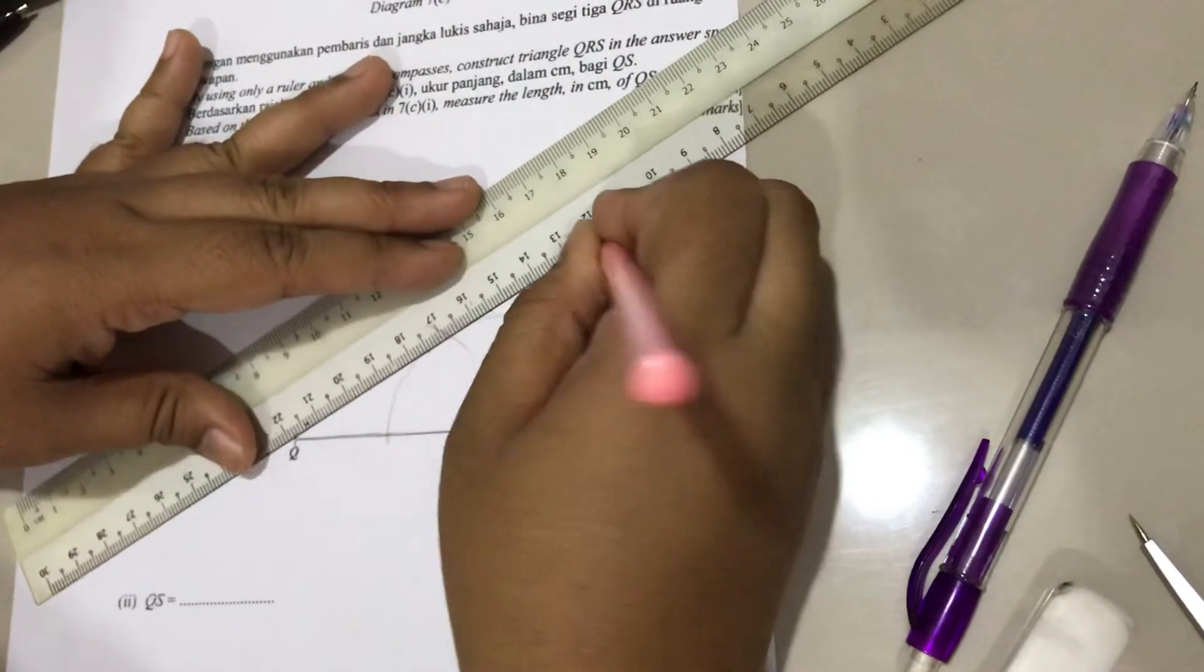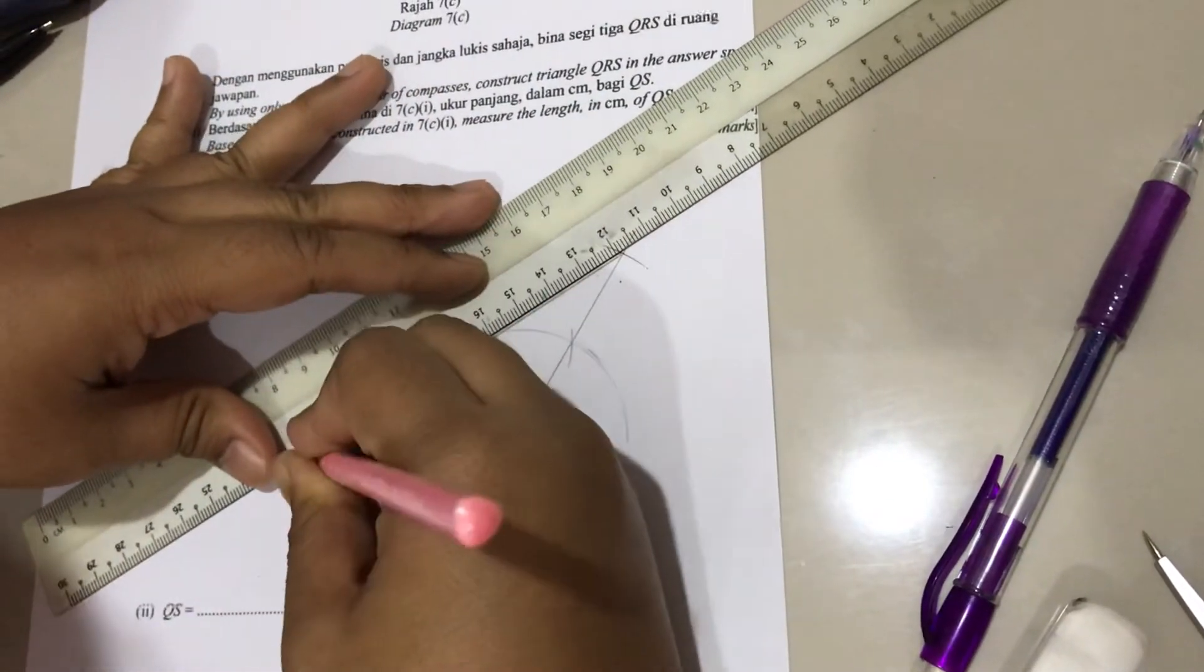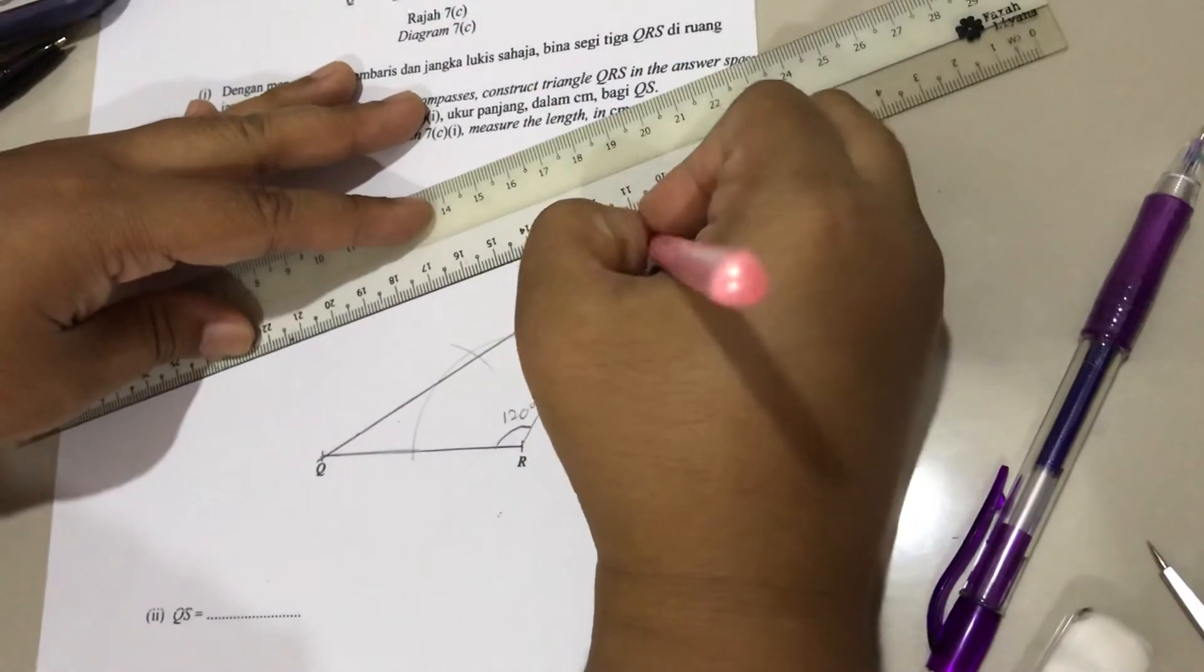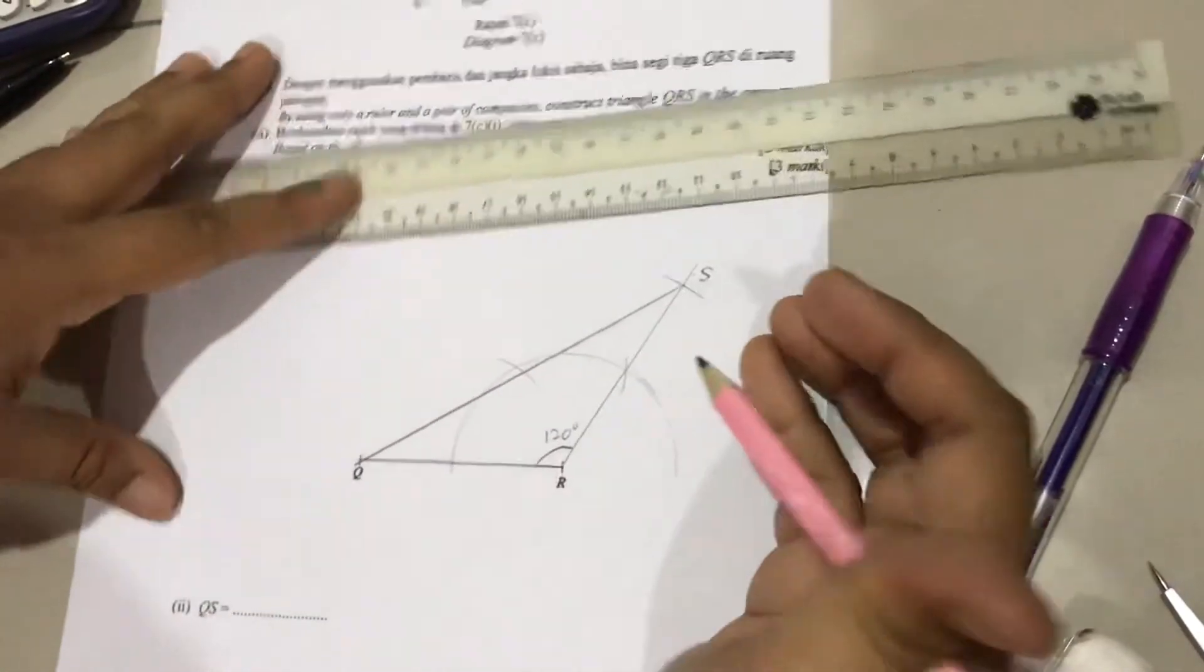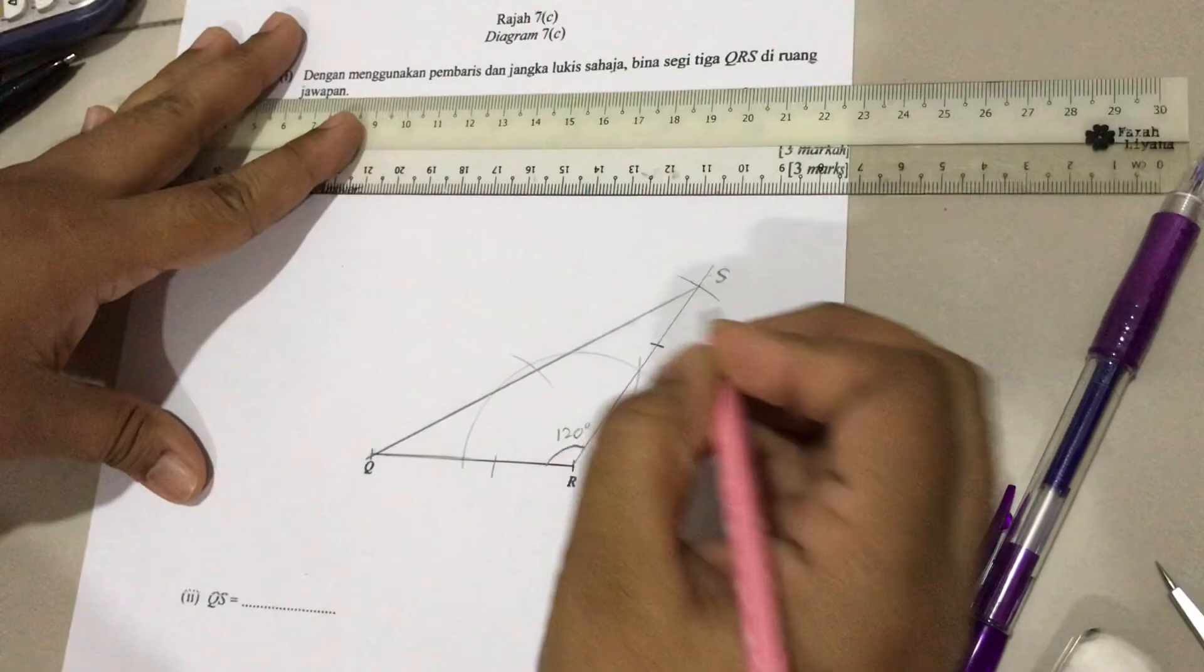And then join the points. So this is triangle QRS. This one is the same size because this is isosceles.